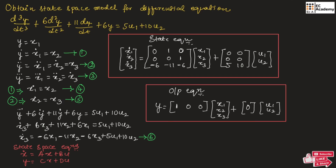Let us start by writing y equal to x1. So, if we differentiate y, we can write it as y-dot, which equals x1-dot. Let us take that as x2 — call this equation number 1. If we differentiate equation 1, we get y-double-dot equal to x1-double-dot, which equals x2-dot. Let us take this as x3 — call this equation number 2.